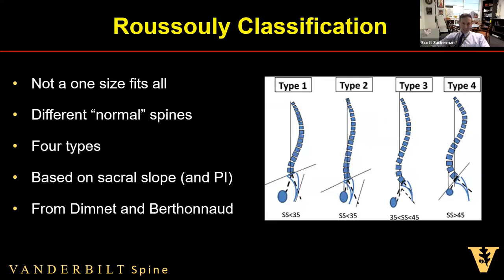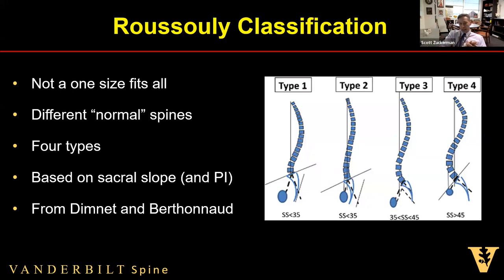The Roussely classification really describes that this is not a one-size-fits-all approach. We don't want one measurement or one parameter that applies to everyone — it embraces the idea that we have a lot of different normal spines: Type 1, Type 2, Type 3, and Type 4, with a Type 3 antivert added later. It's based mainly on sacral slope, which is somewhat different than we're used to thinking about because we always start with PI.